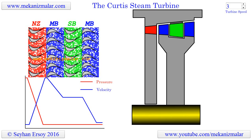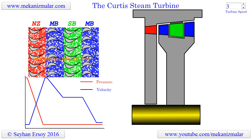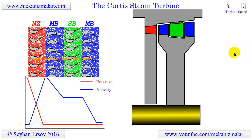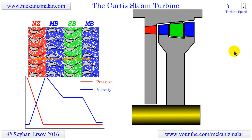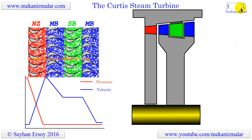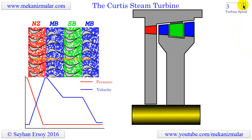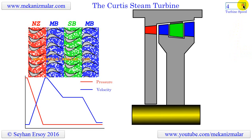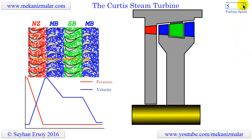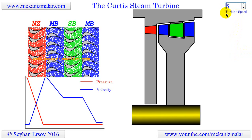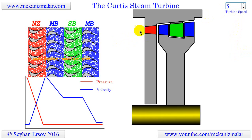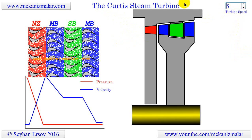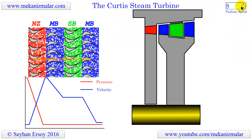Welcome to the video tutorials of mechanisms by Mekonismiller. There are two major steam turbine types: action and reaction turbines. The Curtis steam turbine we are going to discuss here is an action type turbine.